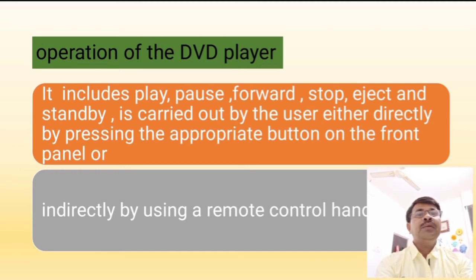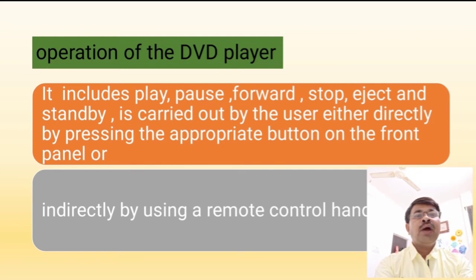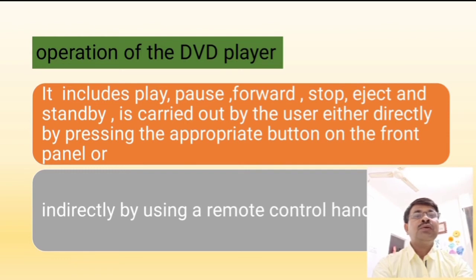The operation of the DVD player: first, you have to insert the DVD into the DVD player. Then you can play, pause, forward, stop, eject, standby, and carry out various other operations either directly by pressing the appropriate buttons on the front panel, or indirectly by using a remote control handset. Using these various controls, we can play audio signals, pause video signals, forward video, and stop audio and video.